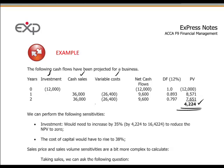For example, we have cash flows showing an investment and cash inflows, variable costs, and so on, with an NPV of 4,224. An increase in the investment amount to 16,424 will reduce our NPV to zero. If the cost of capital were to rise to 38%, discounting cash flows at that rate would likewise bring the NPV to zero — effectively the internal rate of return of this project.